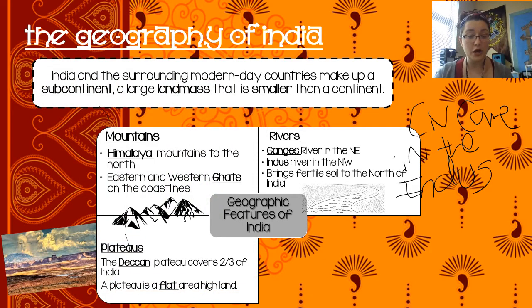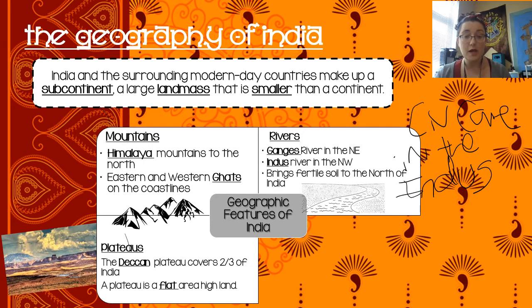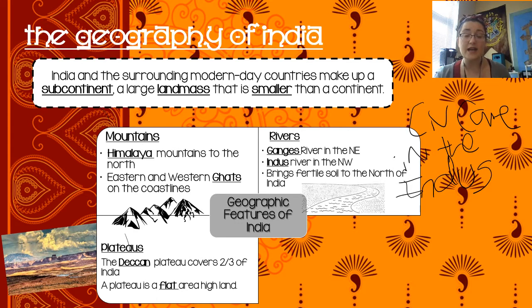We also have plateaus — a plateau is a flat area of high land. The Deccan Plateau covers about two-thirds of India. That's the region between those two mountain ranges, so it's much harder to farm there. You can, but for the most part that area is not as well populated.